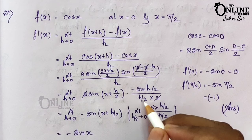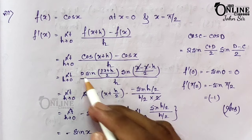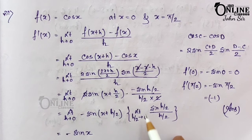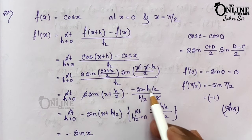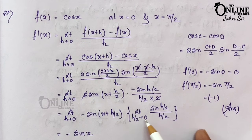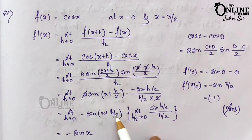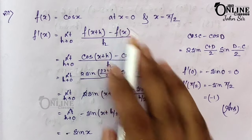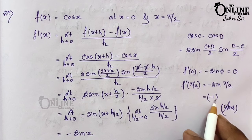The 2 cancels appropriately. Separating the limit: limit h→0 of -sin(x + h/2), multiplied by limit (h/2)→0 of sin(h/2)/(h/2), which equals 1. Substituting the limiting value: -sin(x + 0) = -sin x. So f'(x) = -sin x. Therefore f'(0) = -sin 0 = 0, and f'(π/2) = -sin(π/2) = -1.